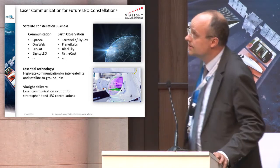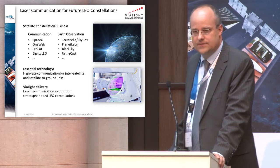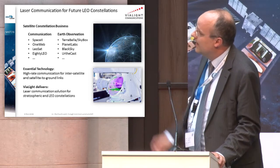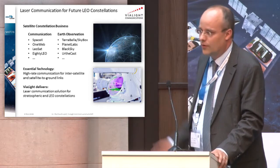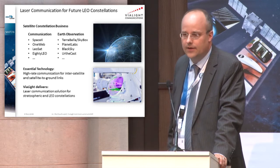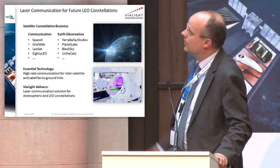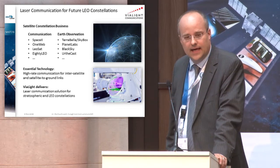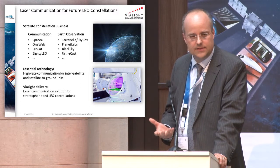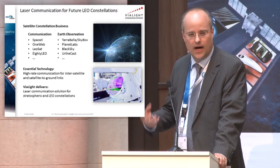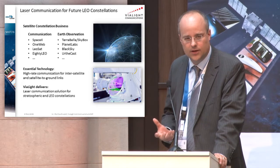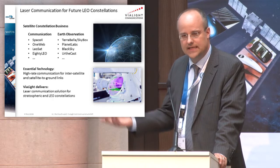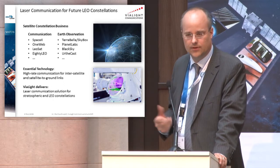So to the new constellations. What we currently see on the market is an evolving business for new constellations — I have put a couple of names here, and we have heard some of them speaking today in the communication part and also on Earth observation systems constellations. The common part of all these constellations is that you need communication, so hybrid communication is a key technology to make these constellations work — that is for inter-satellite links between the satellites and also for satellite to ground communication.